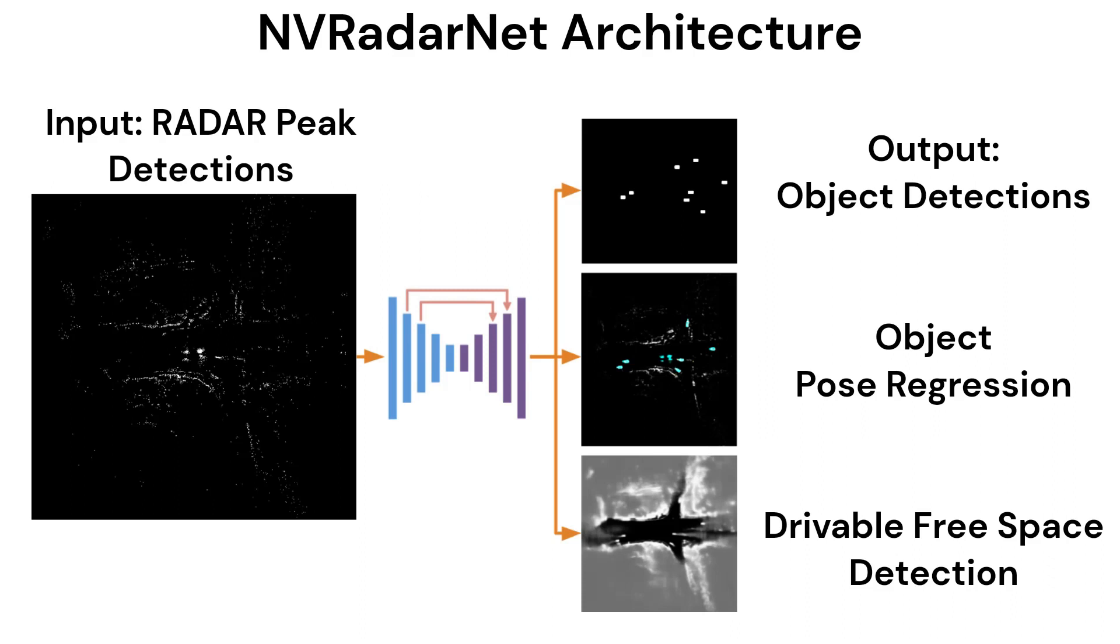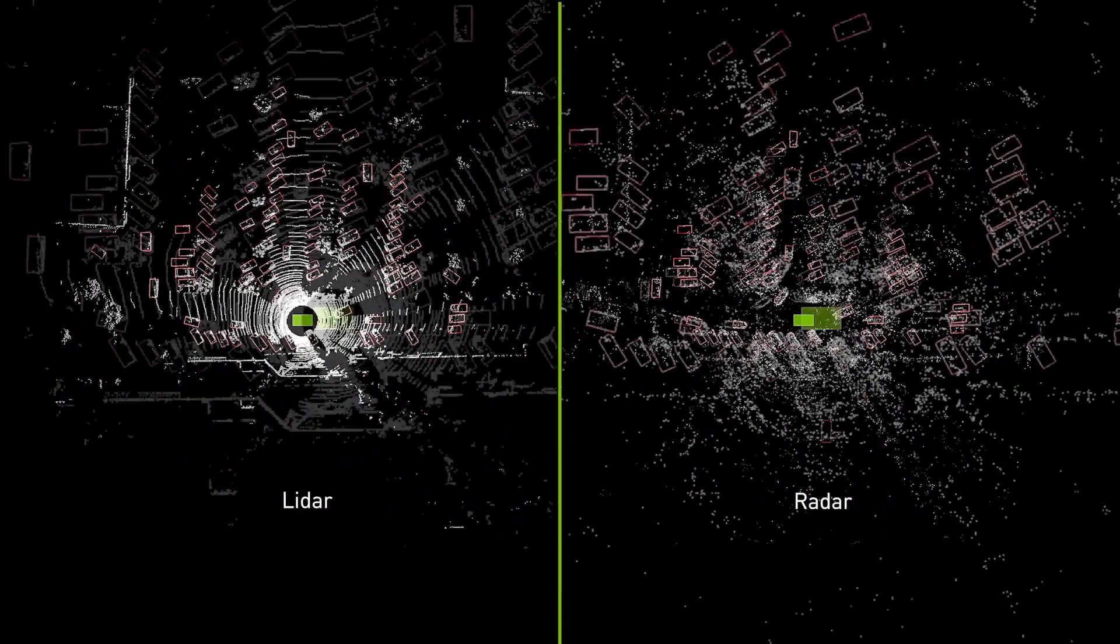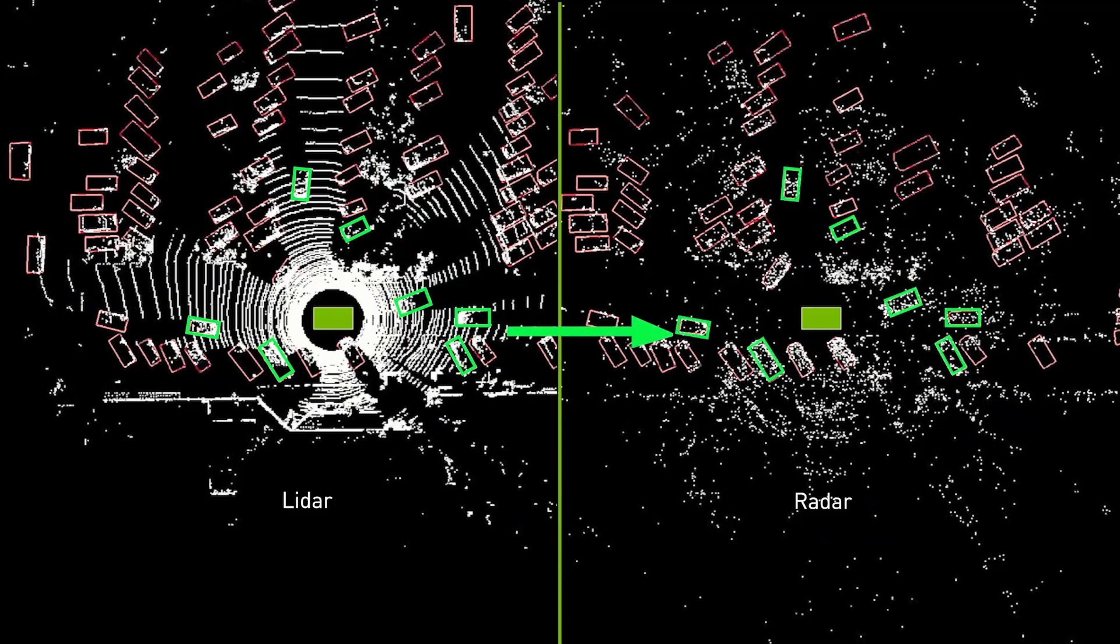To train the radar DNN, ground truth data for objects like cars was created by propagating bounding box labels from the lidar data domain, in which a human is able to visually identify and label cars, into the radar data domain, where the data is too sparse for humans to accurately annotate.